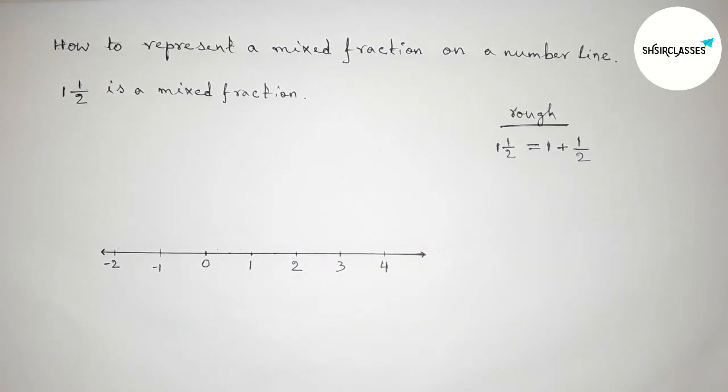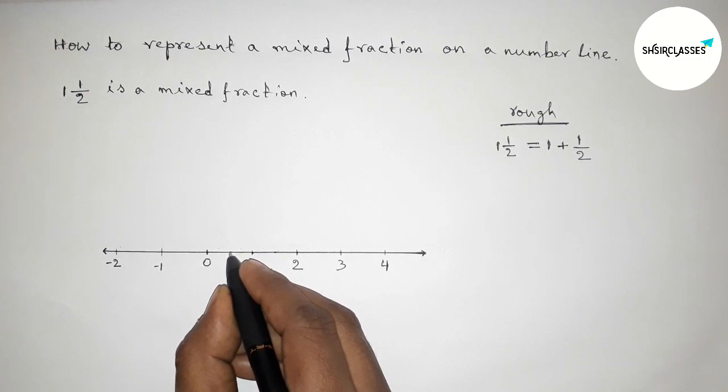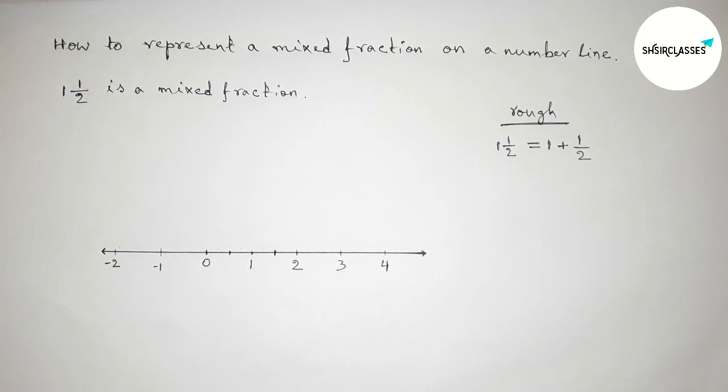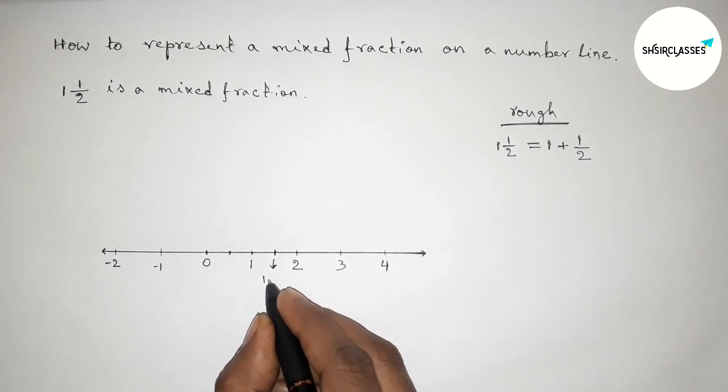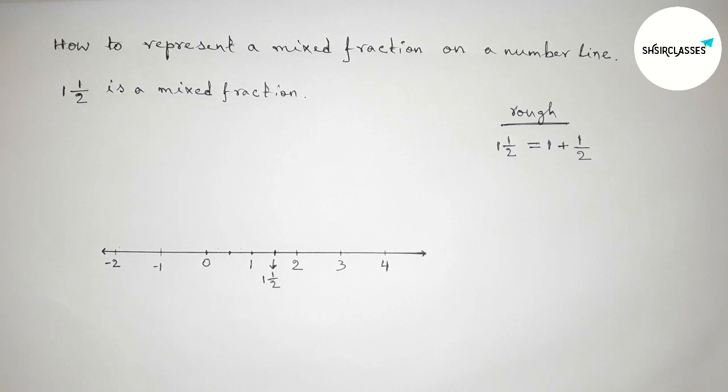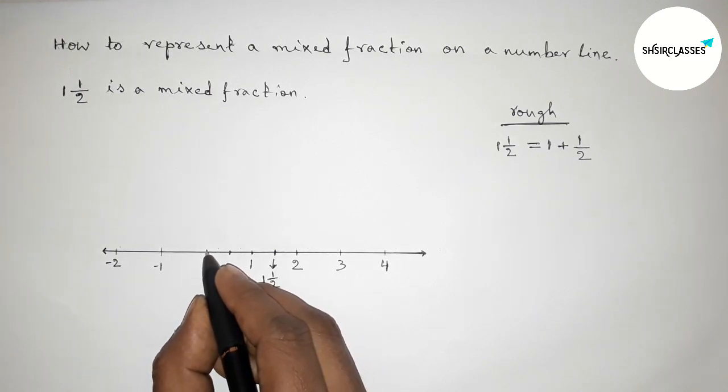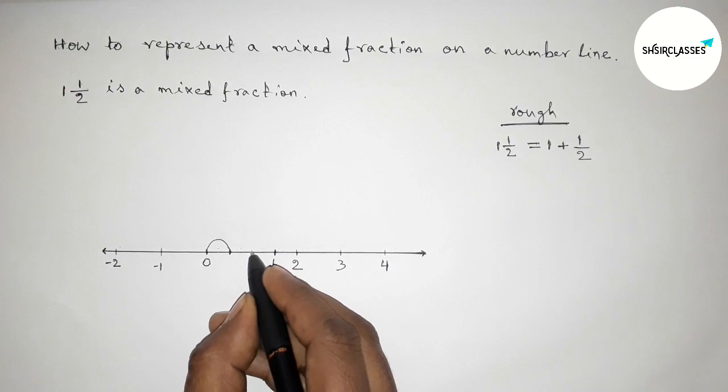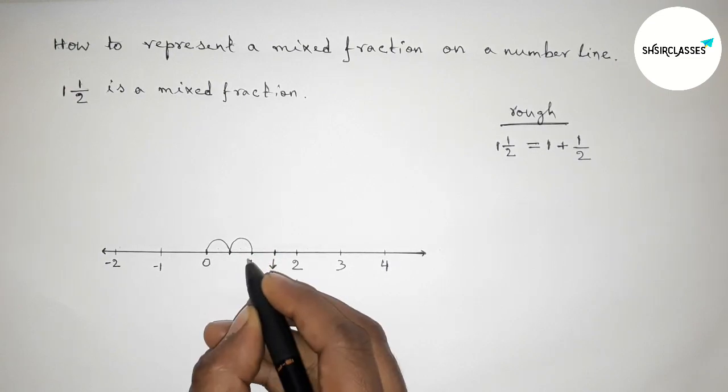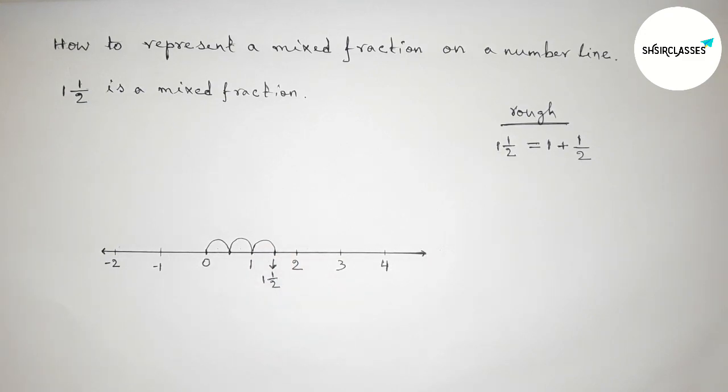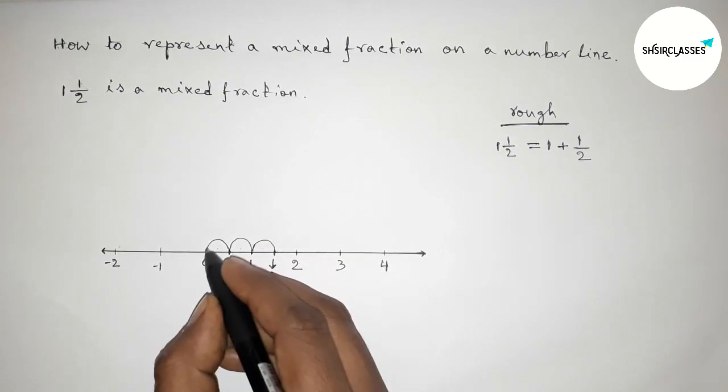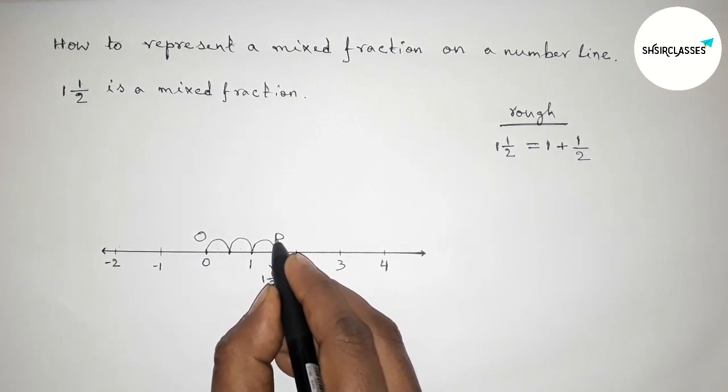This is half and this is half. So this represents 1 1/2. Now marking this by this way: from 0 to this half is 1, and half to this half, so this is total 1 1/2. Now taking here O and taking here P.